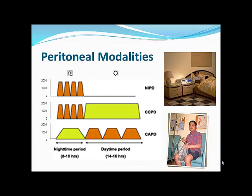Continuous Cycling Peritoneal Dialysis (CCPD) is also good for rapid transporters who don't have residual renal function and need more clearance than NIPD provides. In CCPD, patients have rapid nighttime exchanges, then come off the machine with fluid remaining in the abdomen for a longer dwell, allowing clearance of more middle and larger molecules. Rapid or rapid-average transporters, or large patients needing both short and long dwells, do well on CCPD.